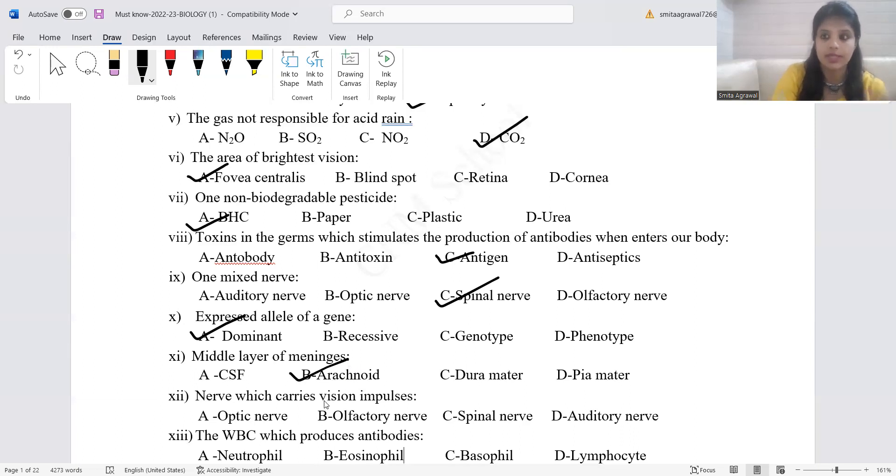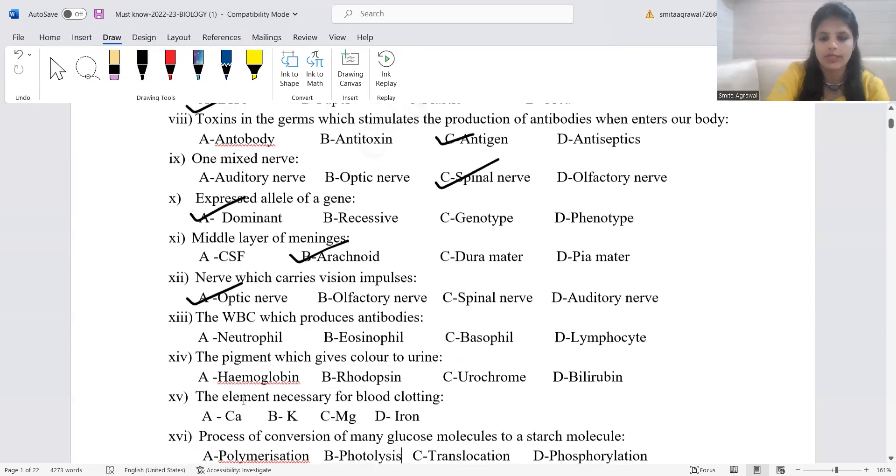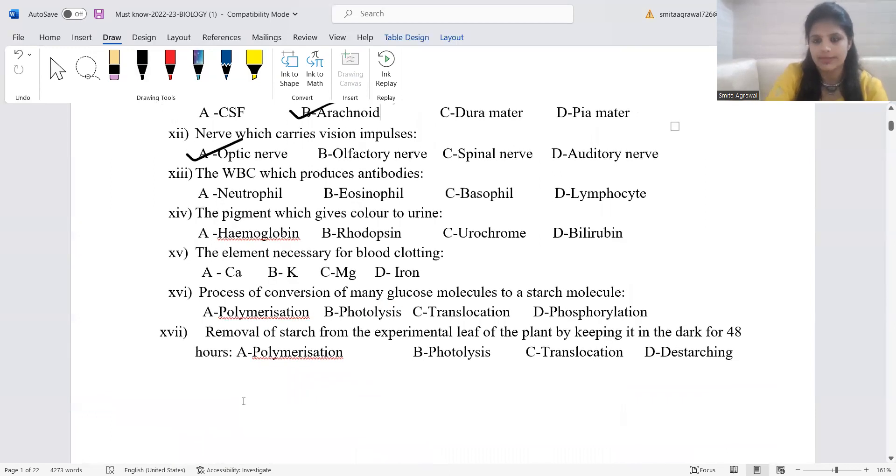Nerve which carries vision. The correct answer is optic nerve. Olfactory is for smell. Spinal nerve is mixed nerve. Auditory nerve is for listening. WBC which produces antibodies: lymphocytes exclusively produce antibodies.